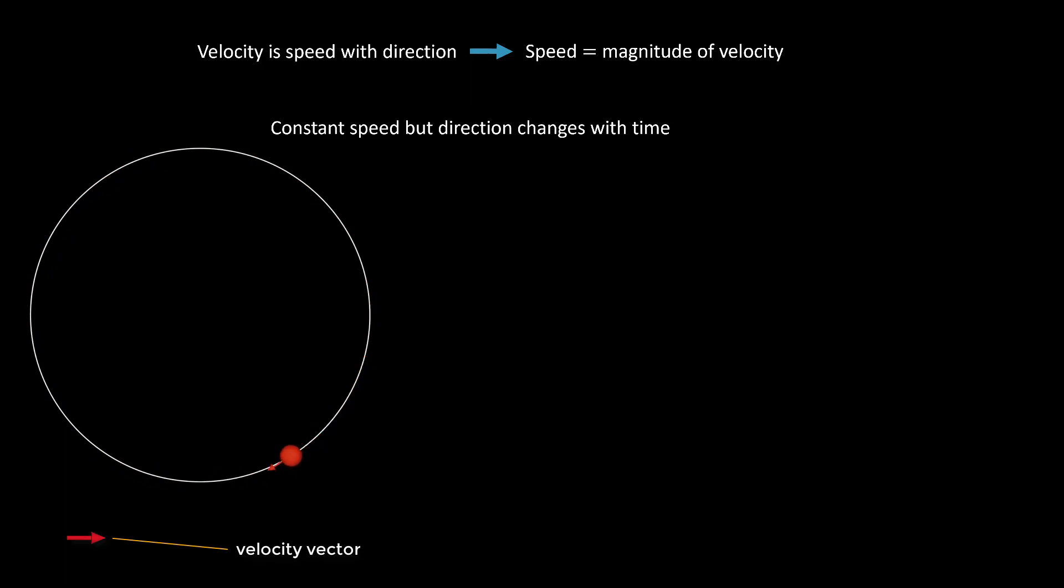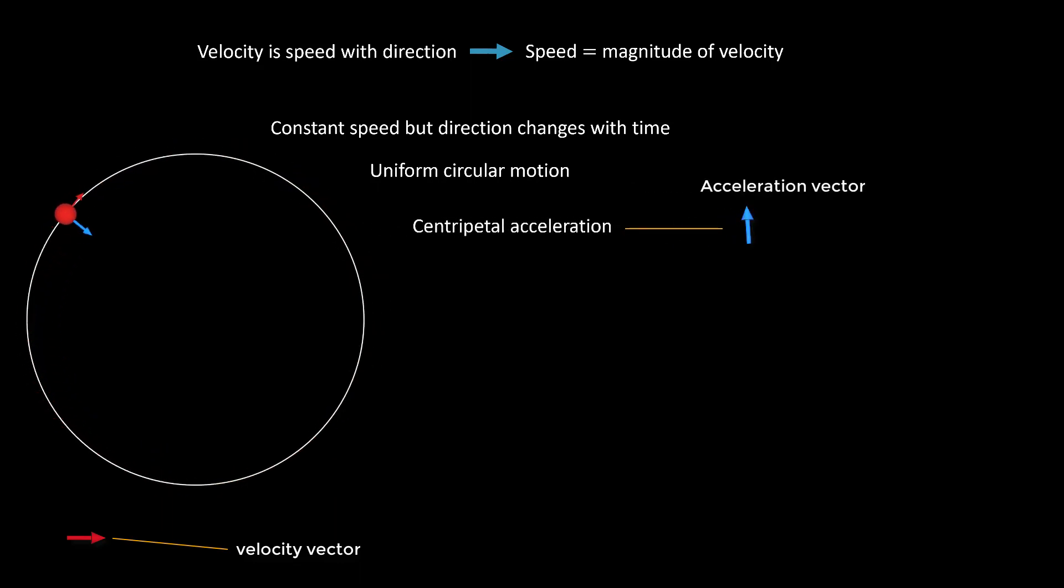This is the case of uniform circular motion whereby a body is moving at a constant speed but its direction is continuously changing. In other words, it has a rate of change of direction. This type of acceleration whereby the speed remains constant but only the direction is changing is given a special name called the centripetal acceleration.